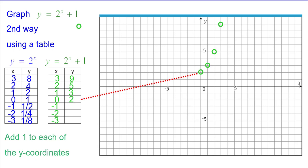Now, a half plus 1 will be a half plus 2 halves, which is 3 halves. So, negative 1, up 1 and a half. A fourth plus 1 is like a fourth plus 4 fourths, which is 5 fourths. So, negative 2, up 1 and a quarter. And 1 eighth plus 1, which is 8 eighths, would be 9 eighths. So, negative 3, up 1 and an eighth.